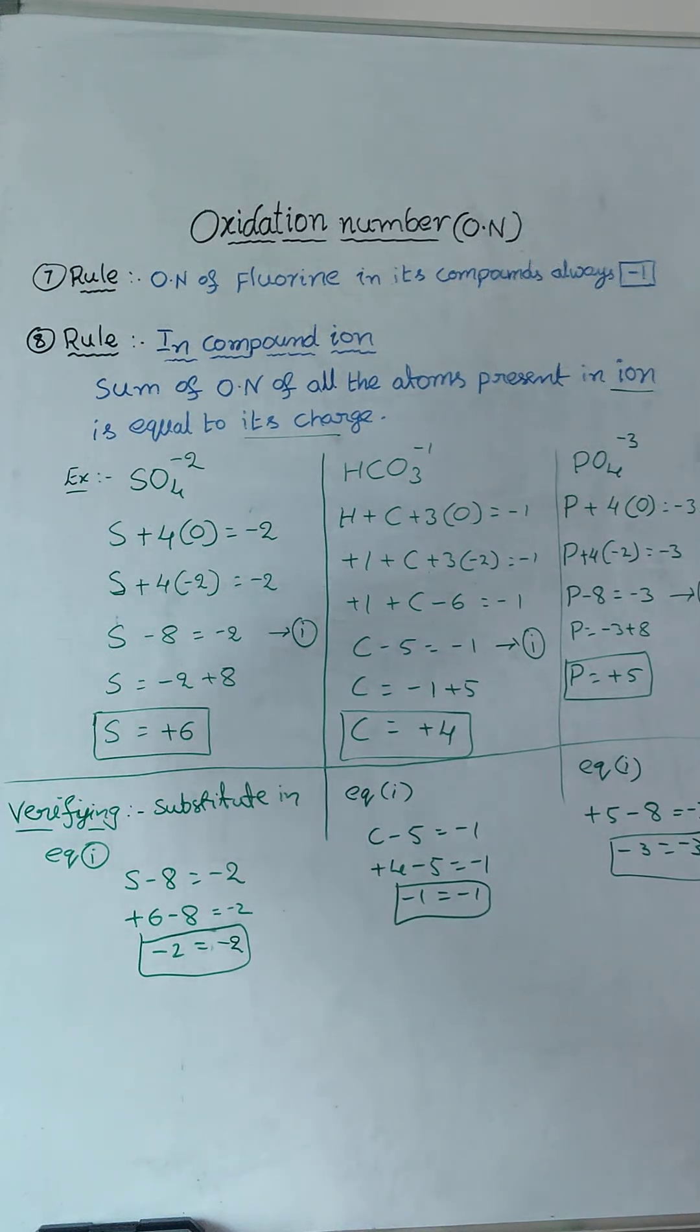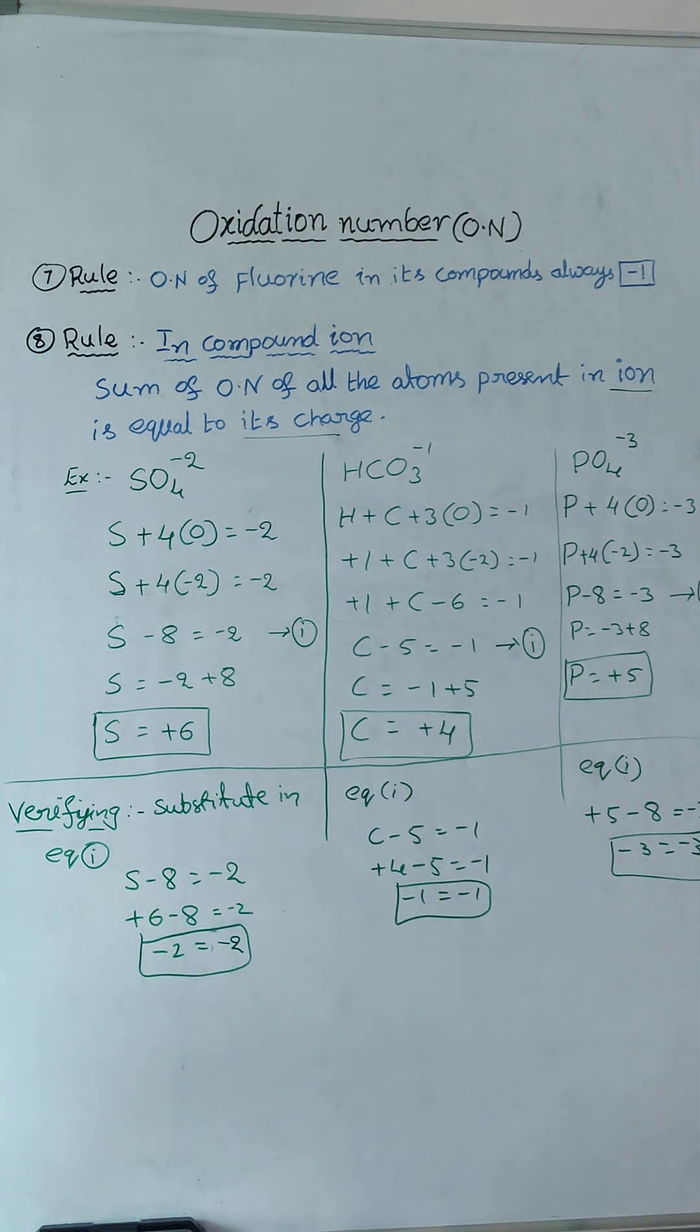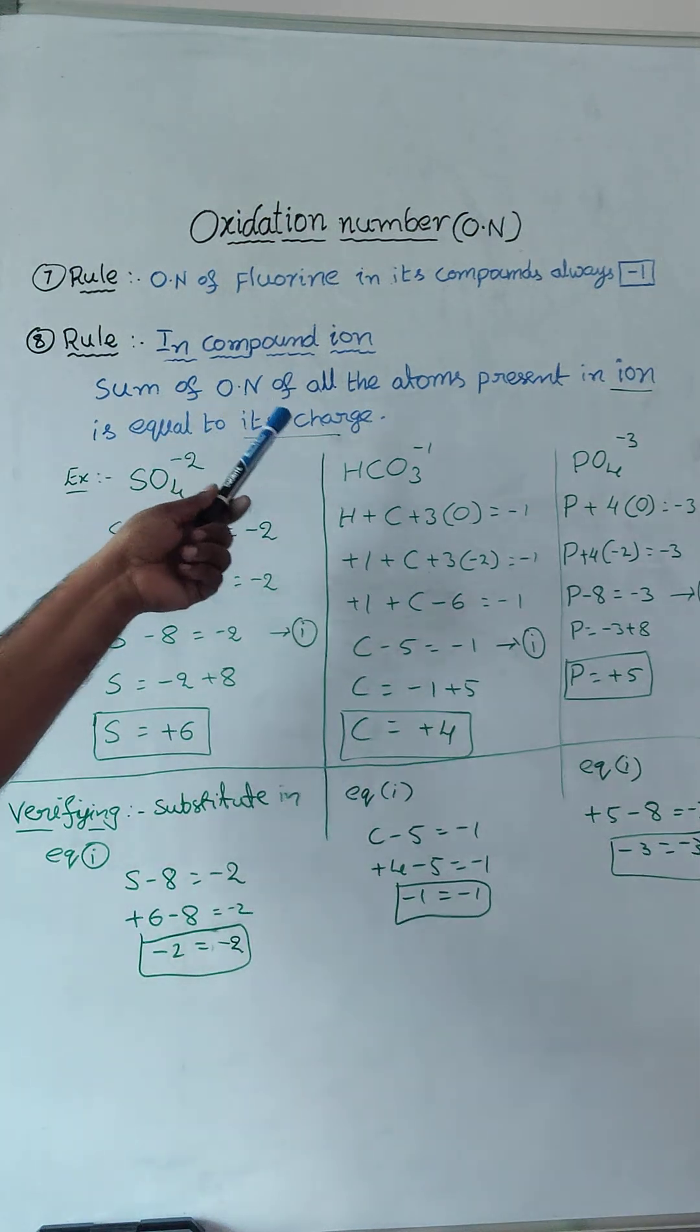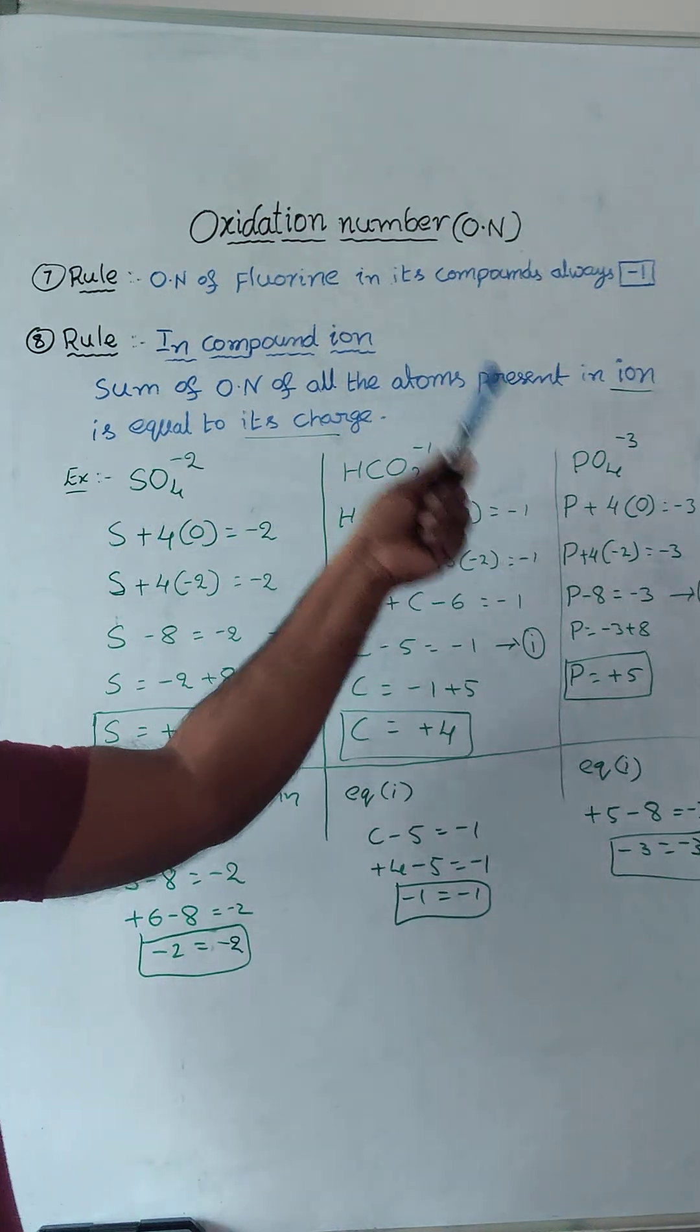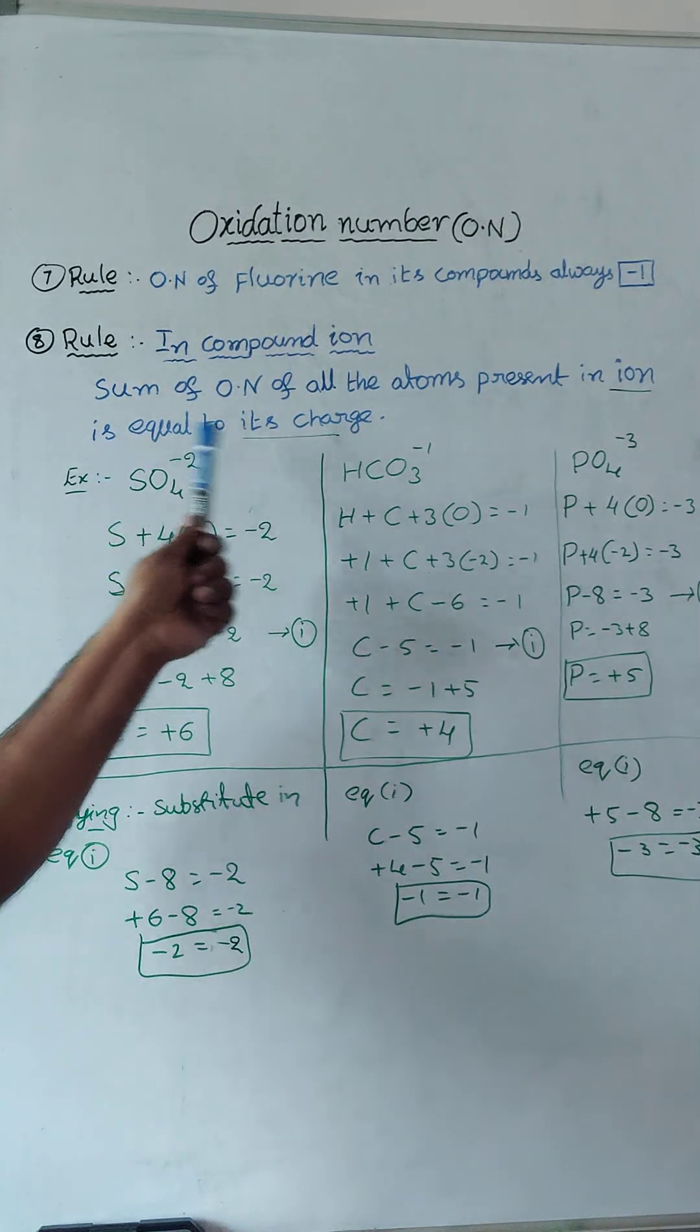Till now we discussed the calculations just for compounds. If it is in ionic form, in ion how to calculate the oxidation number means, in compound ions, sum of oxidation number of all the atoms present in an ion is equal to its charge.